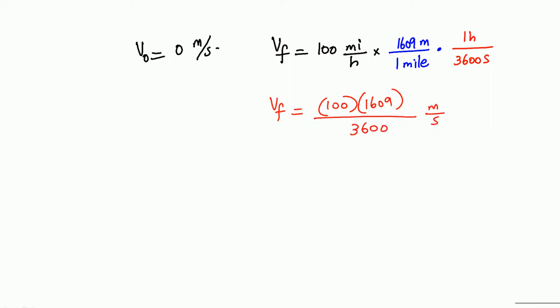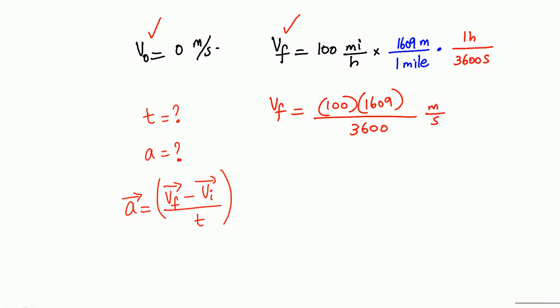V final equals 100 times 1609 divided by 3600 meters per second. We have initial velocity and final velocity, but we do not know the time and we do not know the acceleration. By definition, acceleration equals final velocity minus initial velocity divided by time — that is, change of velocity divided by time. We do have the change of velocity, but we don't know what time is.